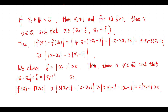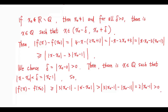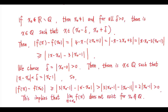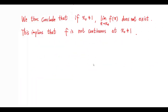Then there is a rational number x such that the absolute value of x minus x0 is less than delta. So the absolute value of f(x) minus f(x0) is greater than 2 delta, which is greater than 0. This implies the limit does not exist for this case.